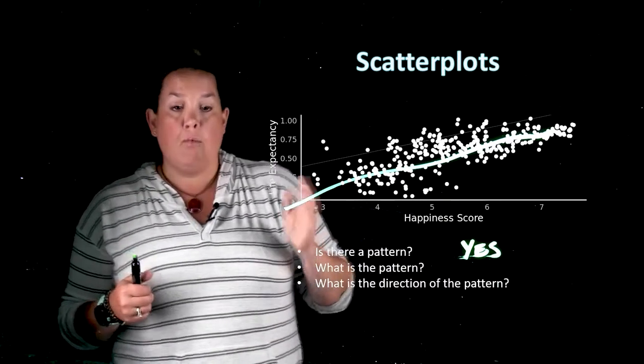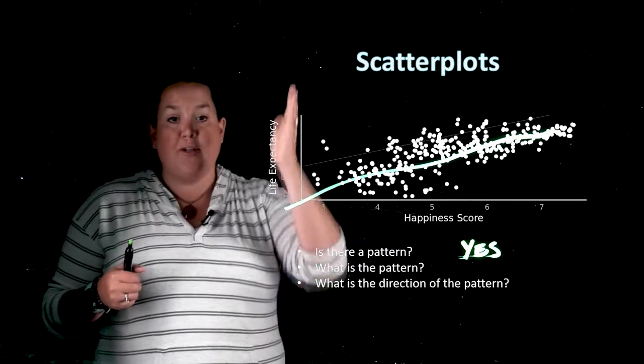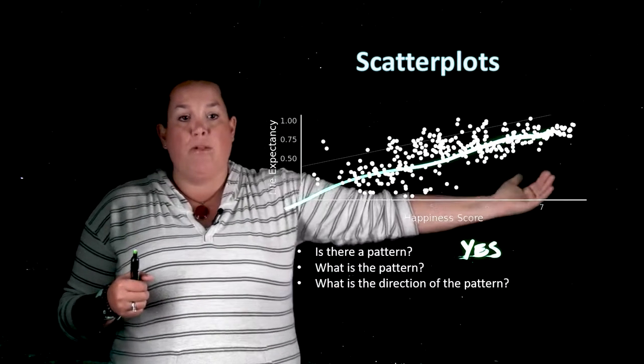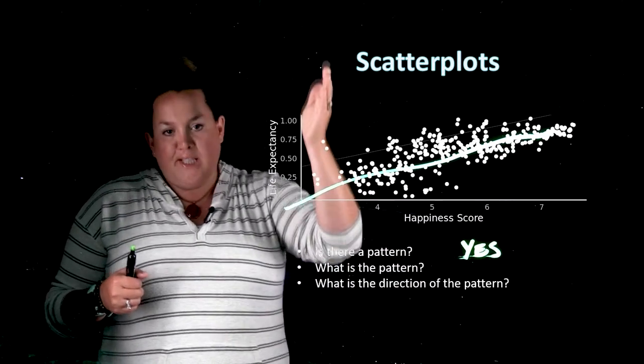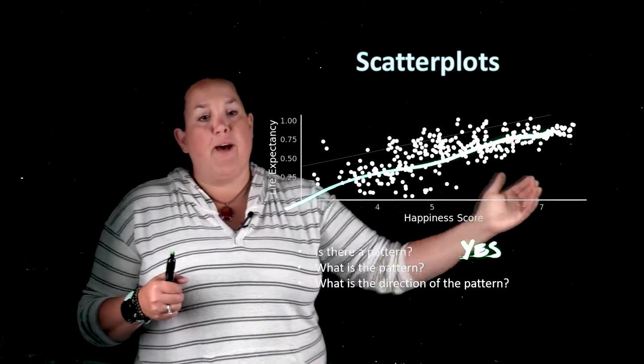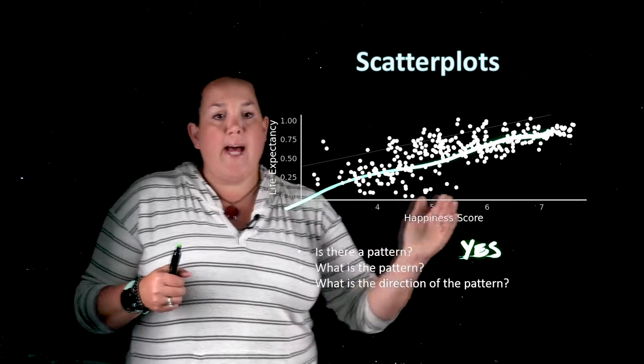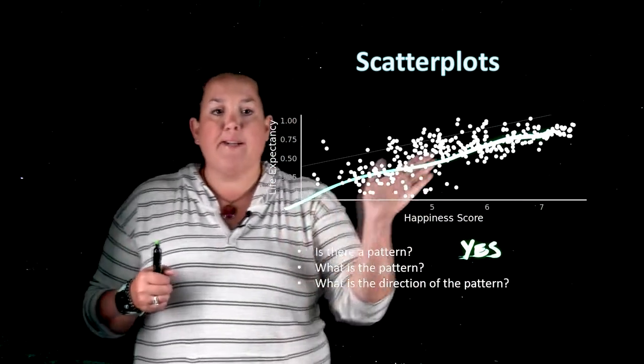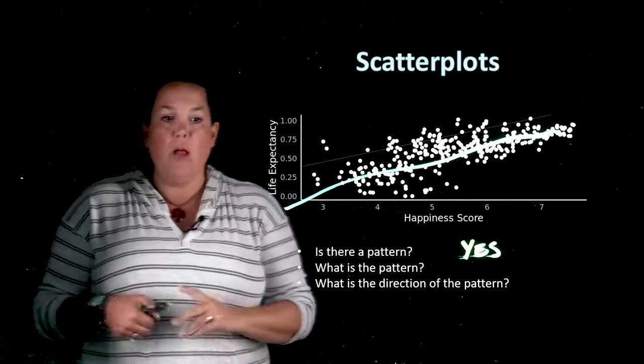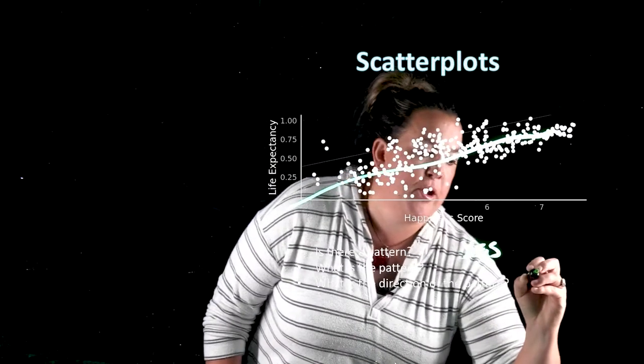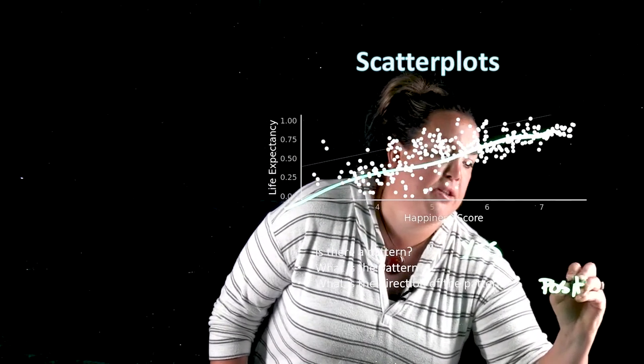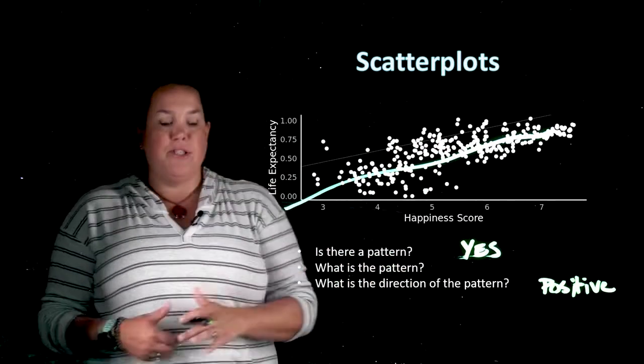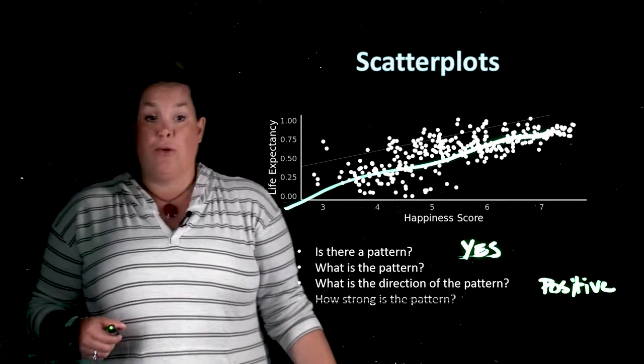Now when you read these, when you look for the direction you're reading it like a book from the left to the right. As you can see here when you move from the left to the right as x increases, y is tending to increase as well. So we would call this pattern positive because there is a positive relationship. As x increases, y is also increasing.